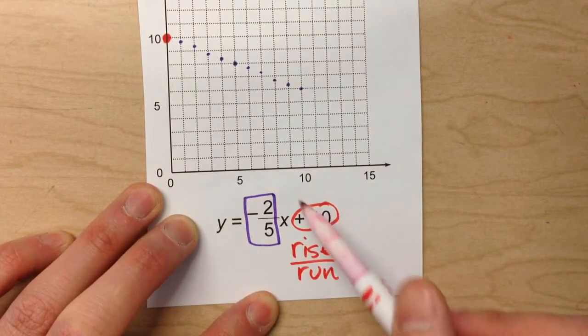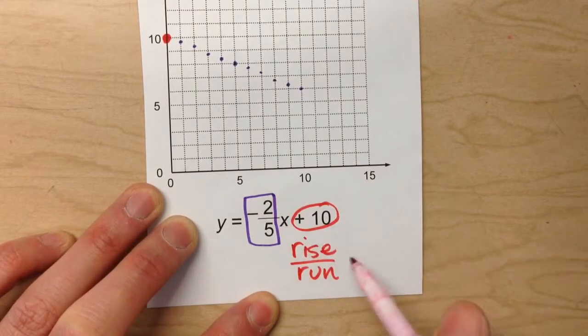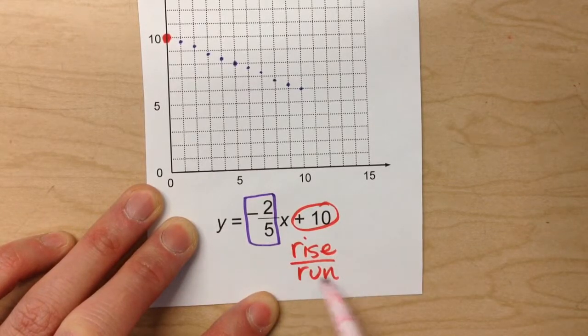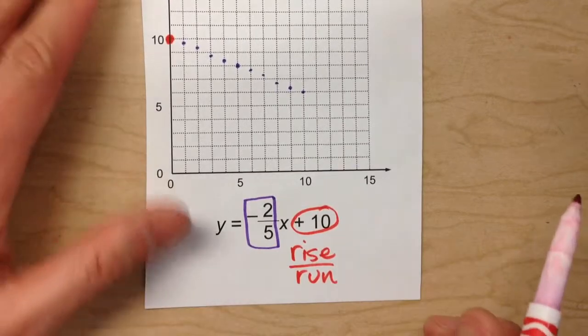What that tells you is, the top number is how much up or down you have to go. The bottom number tells you how much to the right you have to go to find the next point.